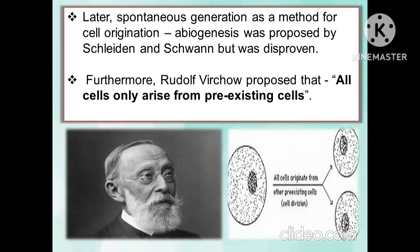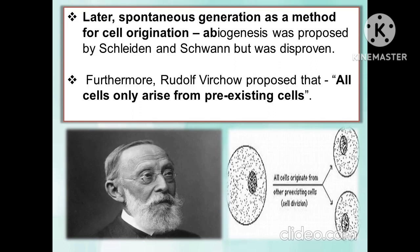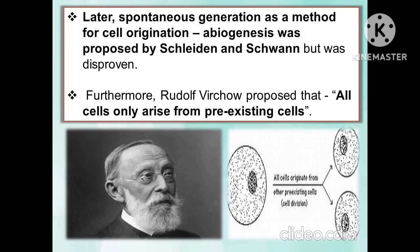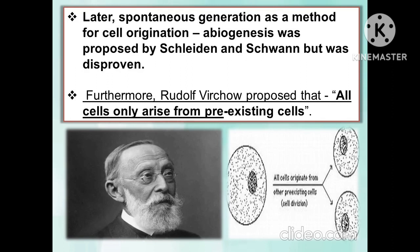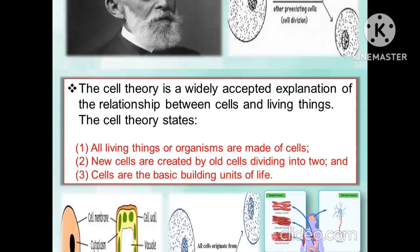Later, spontaneous generation as a method for cell origination — abiogenesis — was proposed by Schleiden and Schwann, but was disproven. Furthermore, Rudolf Virchow proposed that all cells only arise from pre-existing cells.